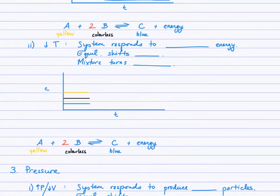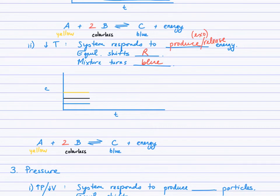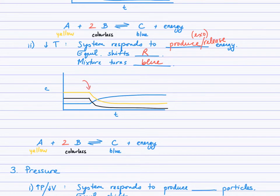An increase in temperature always stimulates the endothermic reaction — the system responds to absorb energy. Now, what if we decrease the temperature? We've removed thermal energy from the system, so the system needs to produce or release energy. That means the exothermic reaction is favored. In this example, with energy on the right side of the arrow, the exothermic direction is the forward direction, so the equilibrium shifts right and the mixture turns blue.